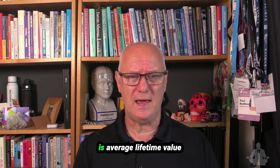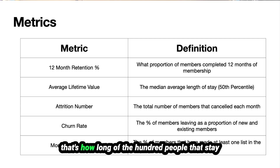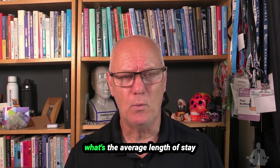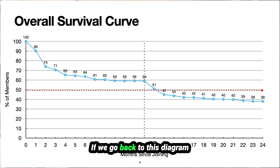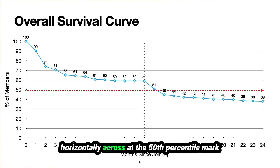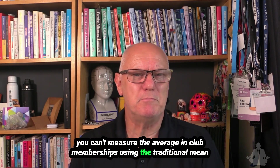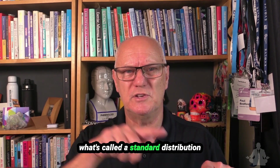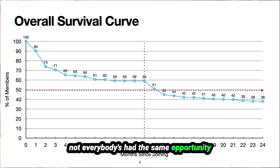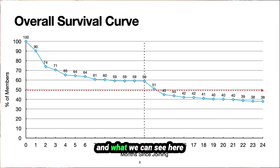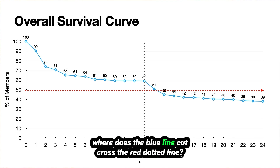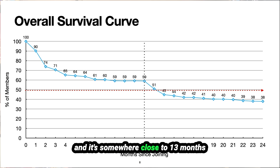The second metric we look at is average lifetime value — how long, of the 100 people that stay, is the average length of stay. Looking at the diagram, there is a red dotted line running horizontally at the 50th percentile mark. We measure the average as the median, because you can't use the traditional mean for club memberships — there isn't a standard distribution since not everybody has had the same opportunity. Running it as the median, we can see where the blue line crosses the red dotted line, which is somewhere close to 13 months.